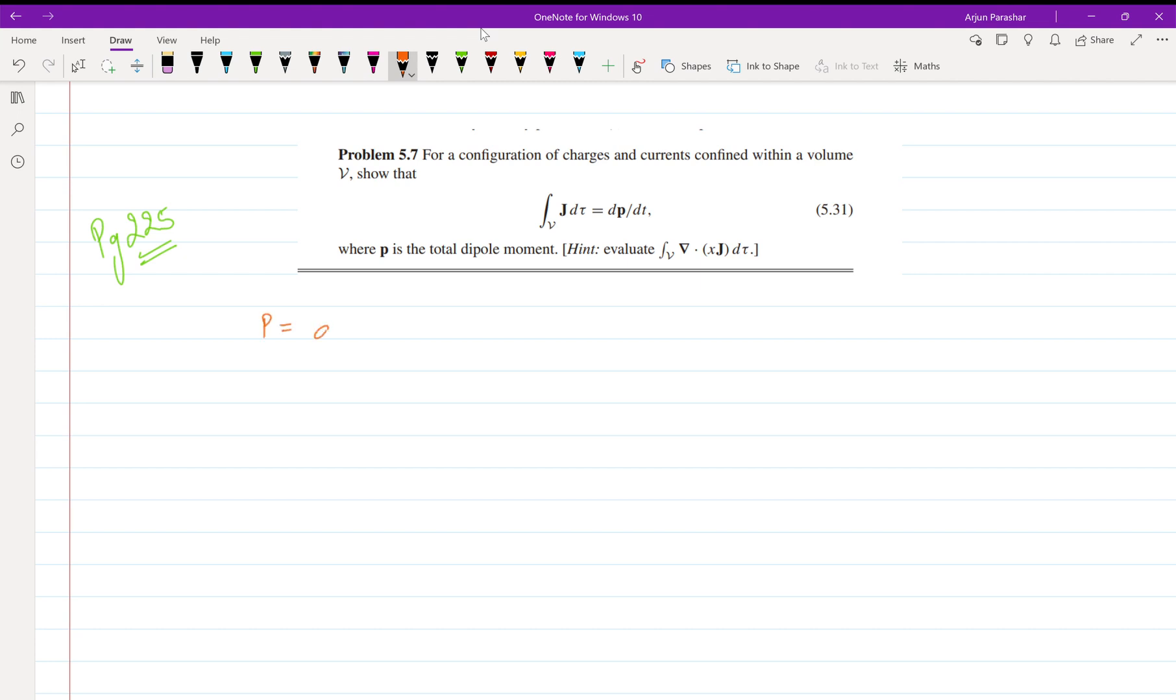I hope you know that p is equal to q into the distance between them, or the distance between them is r. And q is also equal to rho d tau. So integration becomes rho r d tau for the dipole moment.